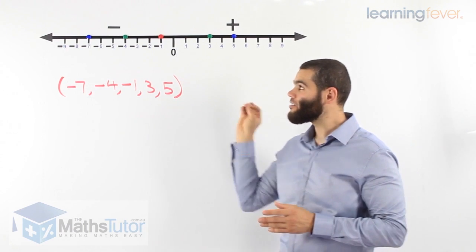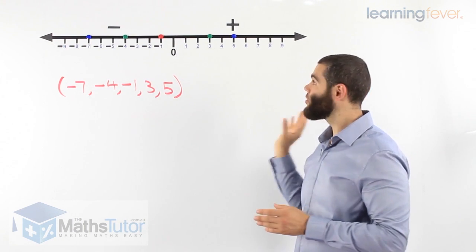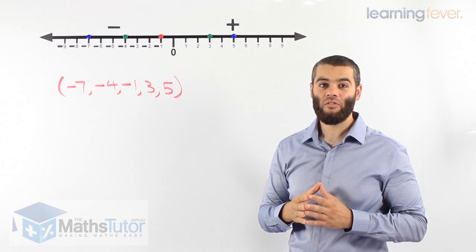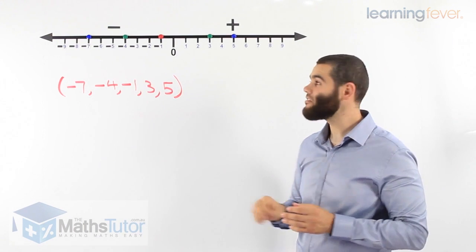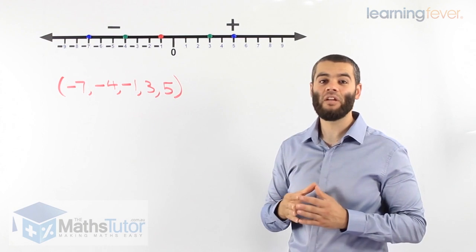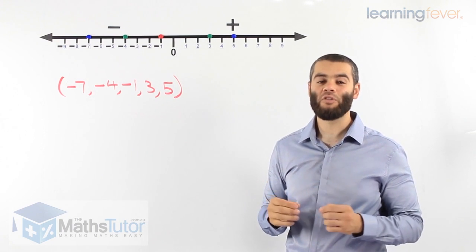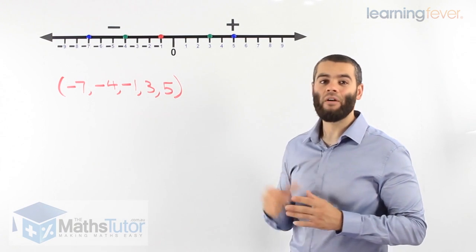So this is the number line. It's basic. Positives on the right, negatives on the left. In the future lessons, we're going to see how we're going to use the number line to actually add or subtract negative or directed numbers.